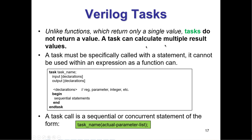Tasks, unlike functions, do not return a value. Tasks can calculate multiple result values. A task is very much like a module — you instantiate it on a separate line, unlike a function that can appear as part of an expression. It has to be specifically called within a statement. It can be sequential or concurrent. The syntax is: task name, parenthesis, and the actual parameter list.